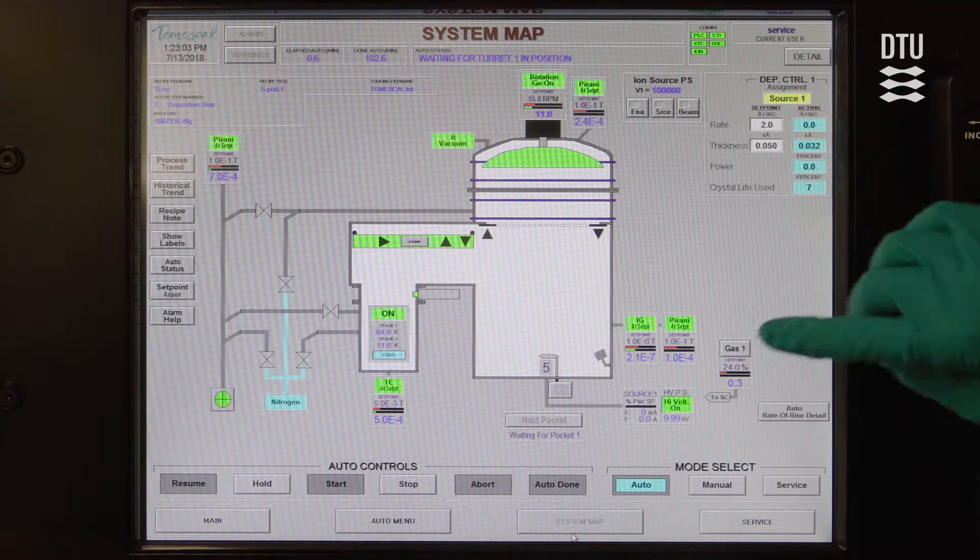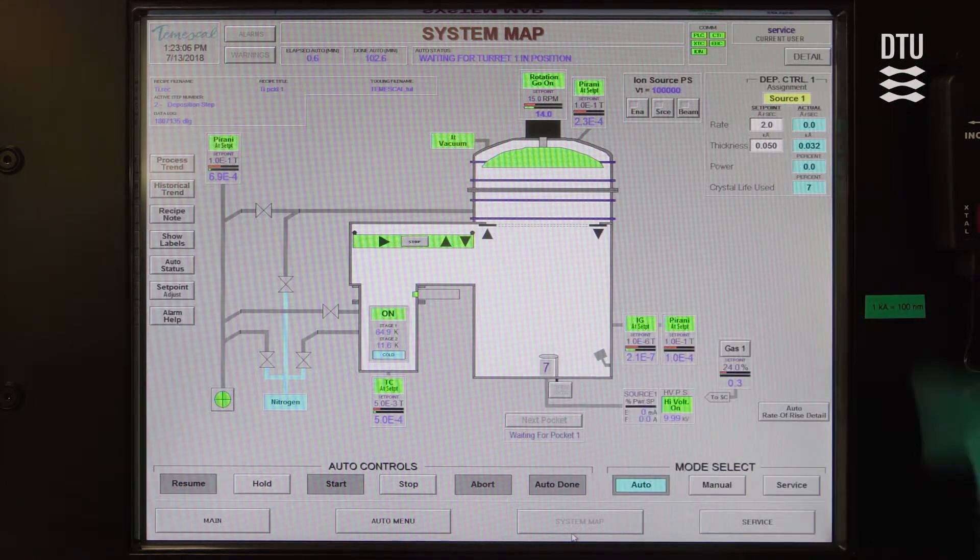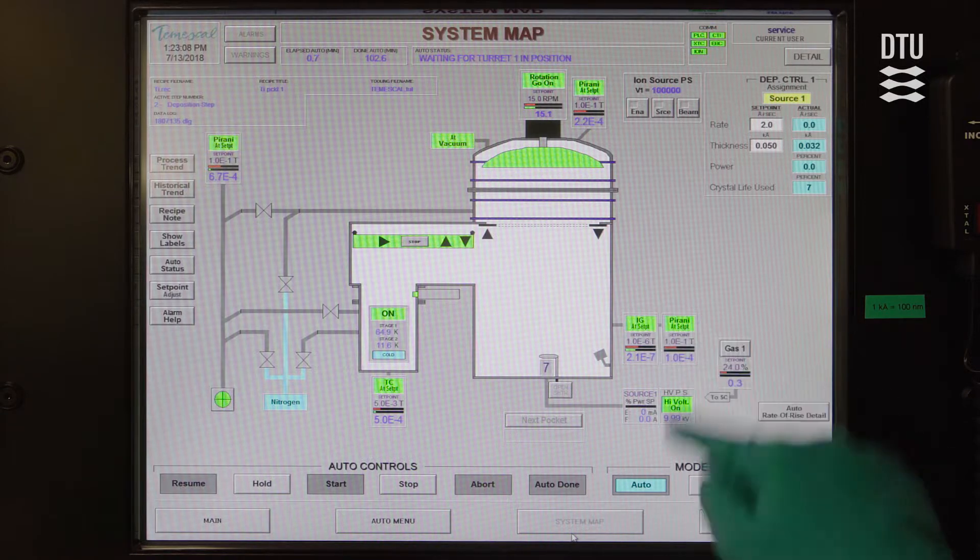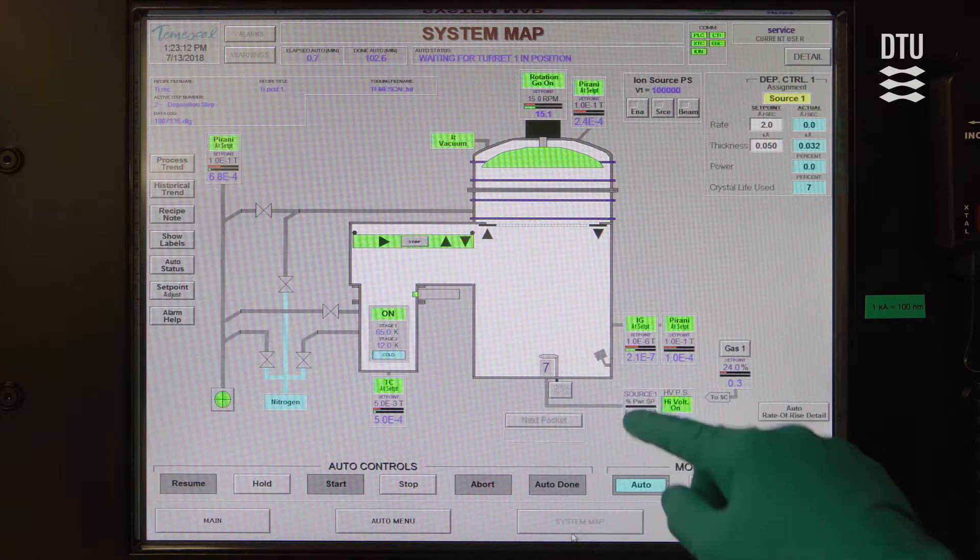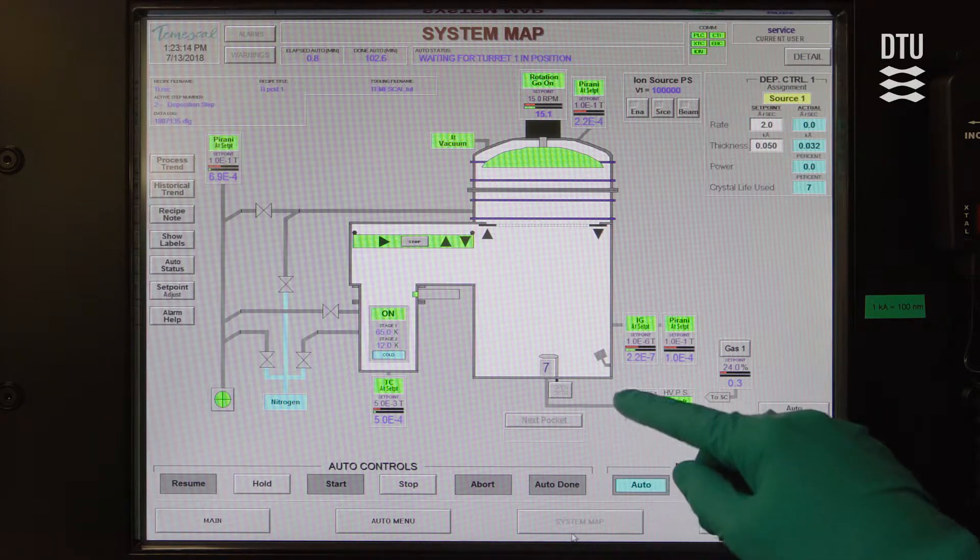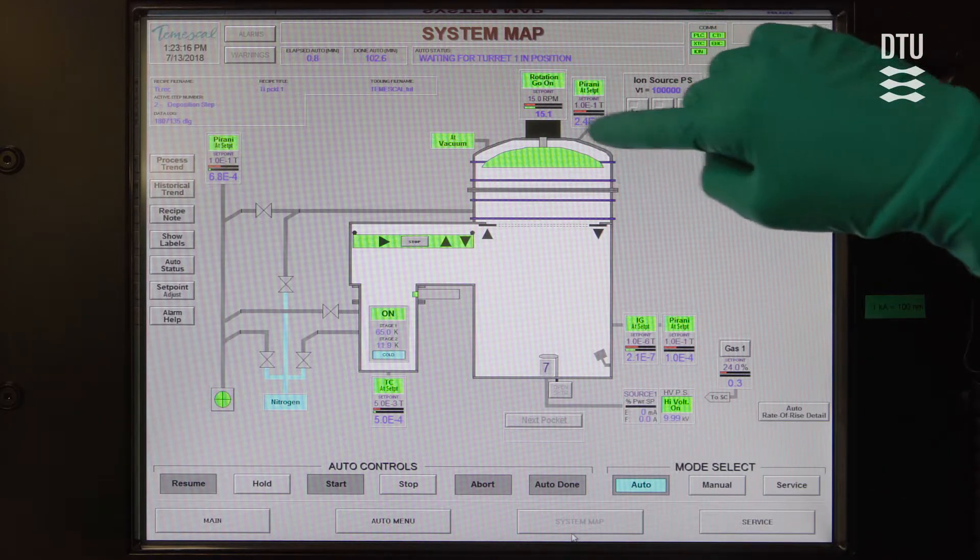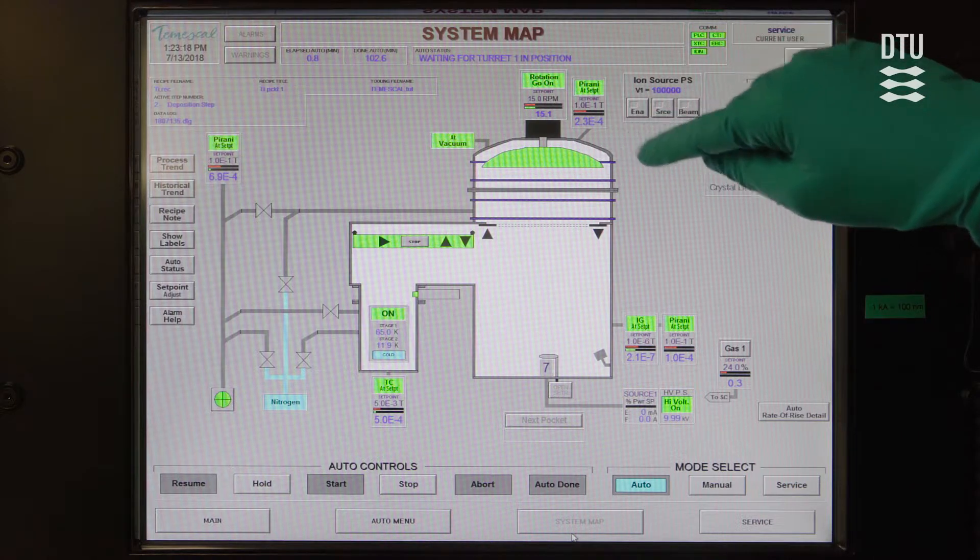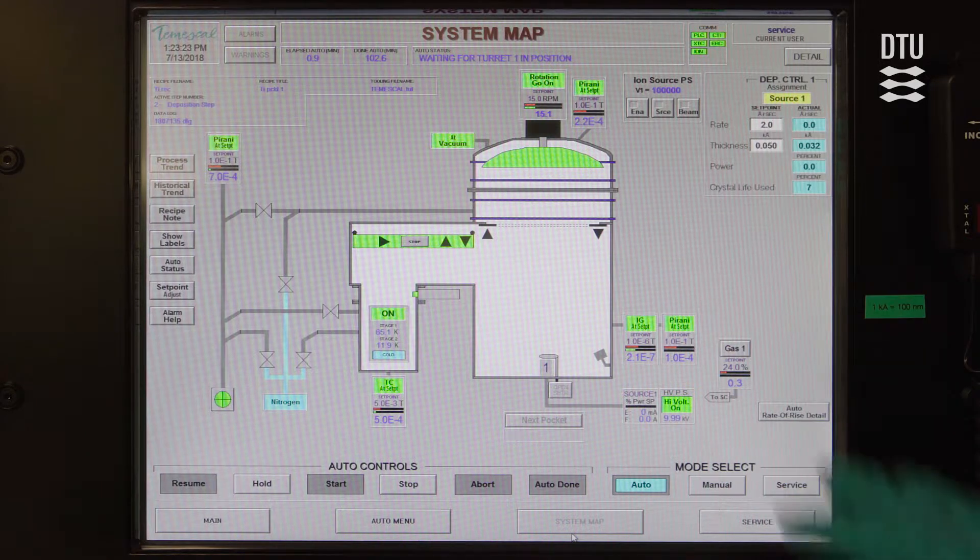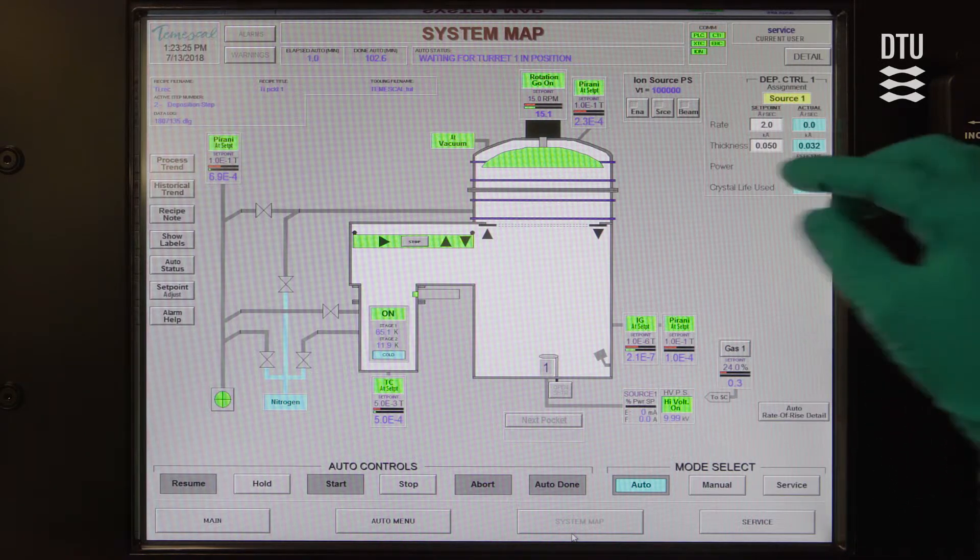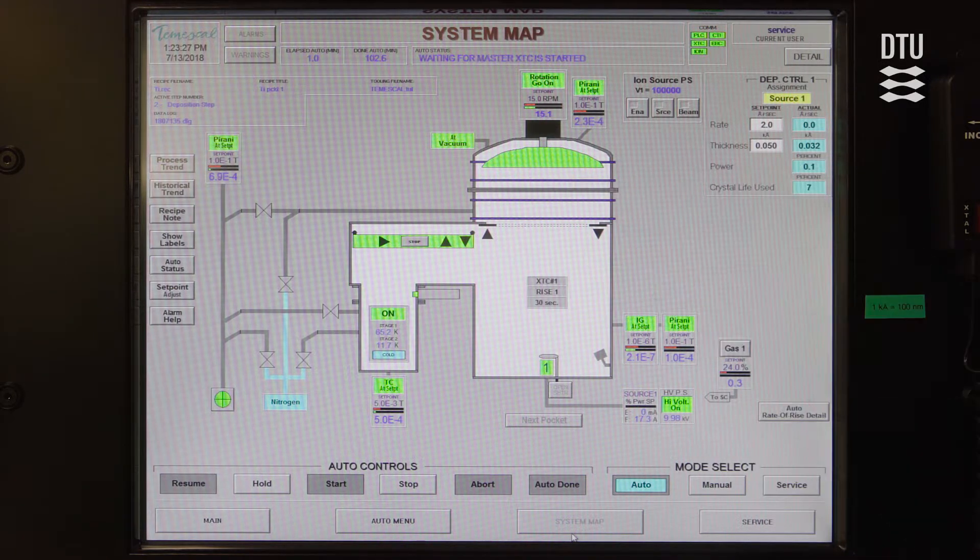So now the system is moving the right pocket into position so that we will be able to deposit the right material. And you can see that the holder has become green which means that it is now rotating. And the system has moved the shield up to protect the junction between the main chamber and the top part of the chamber.